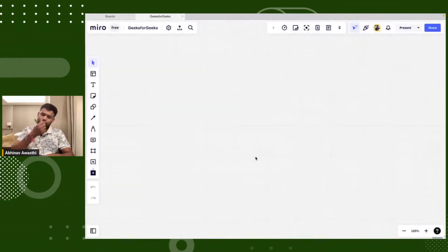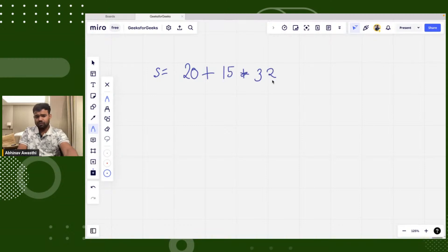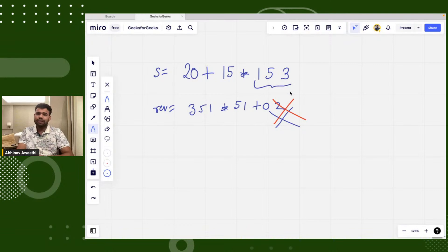If you will see what the problem says, let's say that the equation given to you is like this: 20+15*153. So you have to reverse it, but if you will simply reverse this string, it will become 3 5 1 * 5 1 + 0 2. But this will be wrong because you can see numbers also got reversed. But you have to just reverse the ordering. The reverse equation should be 153 multiplied by 15 plus 20. That's the basic thing.